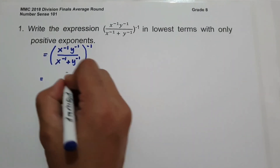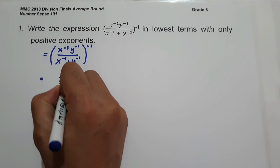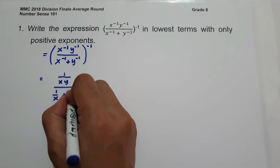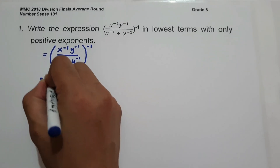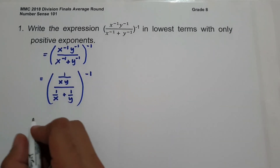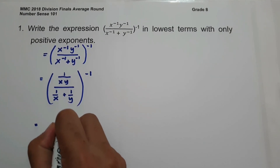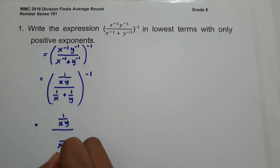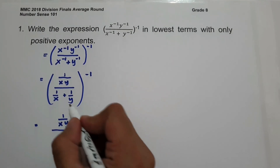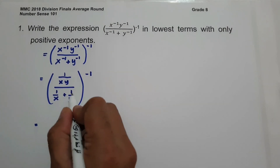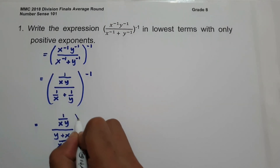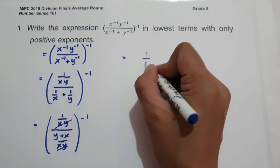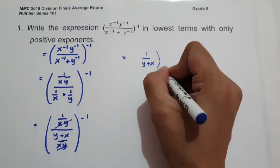So let us find the reciprocal of the numerator, that is 1 over xy, and then x raised to negative 1 is 1 over x, and y raised to negative 1 is 1 over y, and then raised to negative 1. To simplify, let us write the numerator as 1 over xy, all over, and then let us have xy as the denominator, with y times 1 that is y, and x times 1 that is x, raised to negative 1. So we can cancel, and we get 1 over y plus x, raised to negative 1.